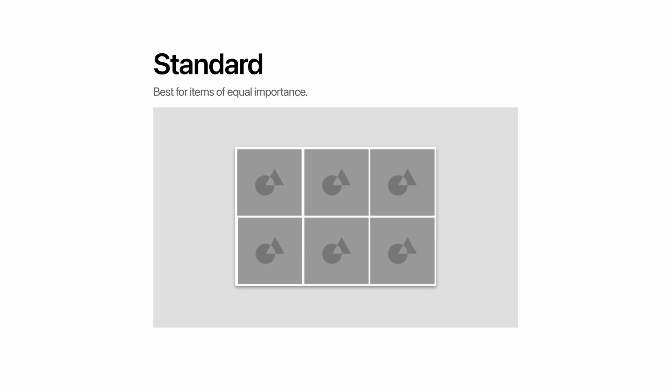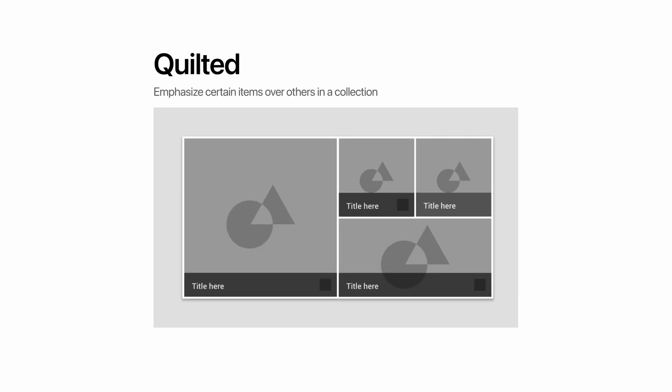There are four types of image lists we need to talk about. The first image list type is standard — it's good when you have items that are of equal importance. A good example of this might be the photo gallery on your phone. Another image list type is quilted, which emphasizes certain items over others in a collection — maybe a new item that was recently released or something you want to feature.